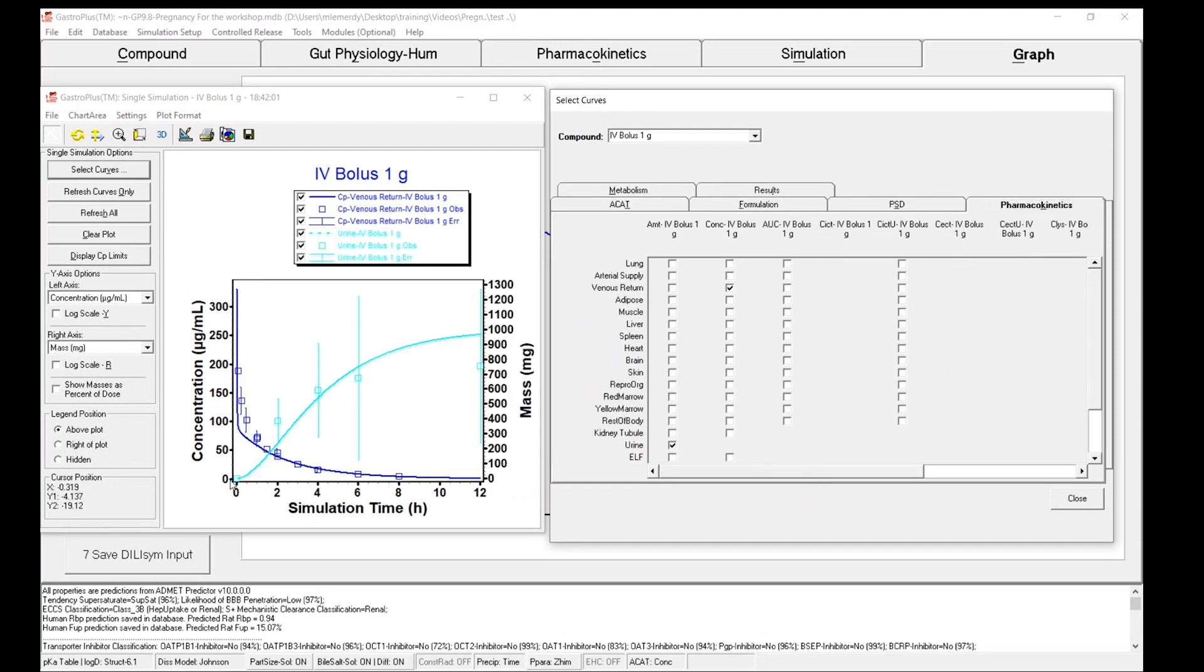And you can see how in light blue, the urinary secretion is well captured by the model. So now that we have this validated model, let's make sure we can predict the PK in both the maternal and the fetal side.